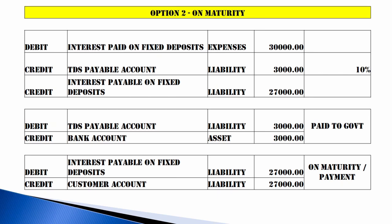Option 2 is where the customer wants to take the interest on maturity, not quarterly. So how will the bank handle provisioning? Quarterly, I'll book the interest of 30,000 rupees, keep 3,000 in the TDS payable account, and keep 27,000 in an interest payable account as a liability. The same next month, I'll remit from the TDS payable account to the bank for the government payment.